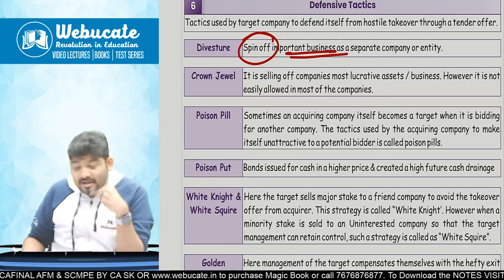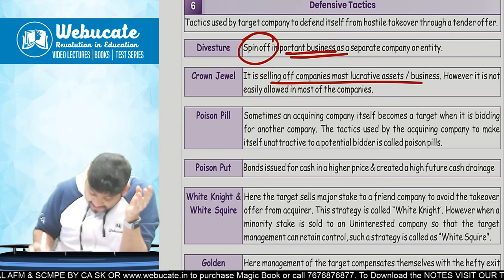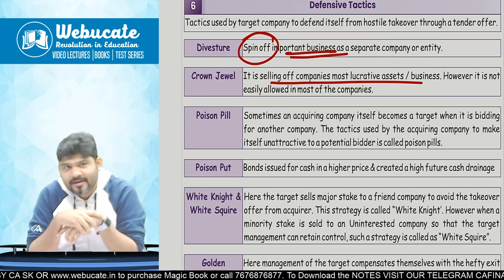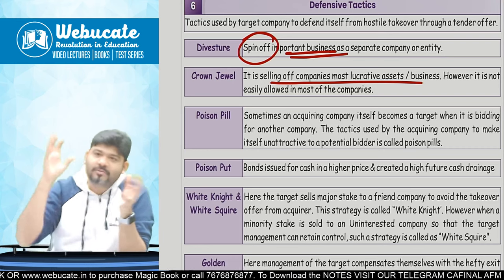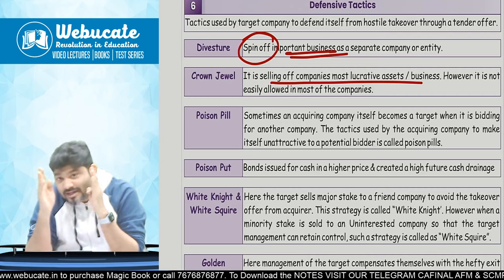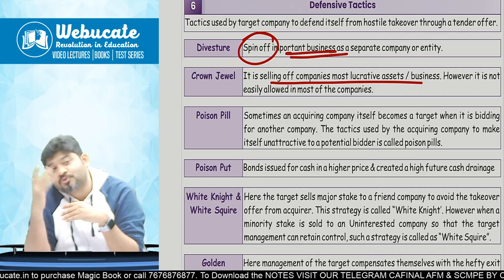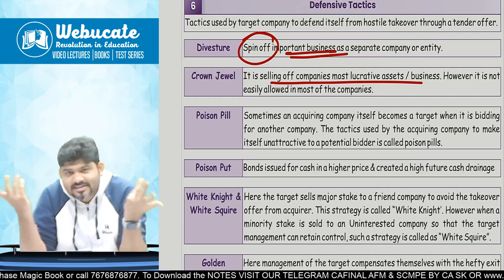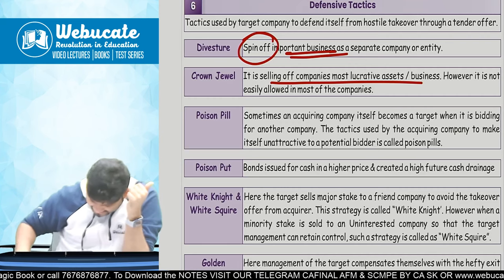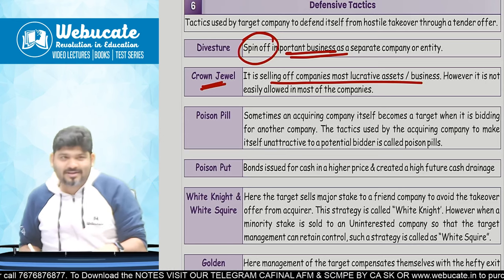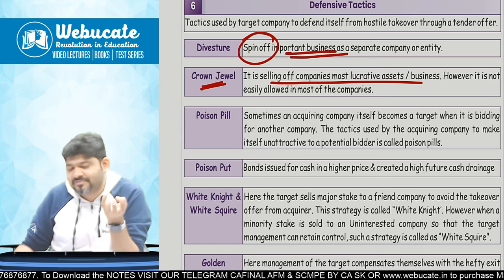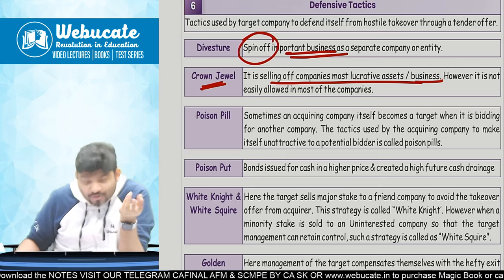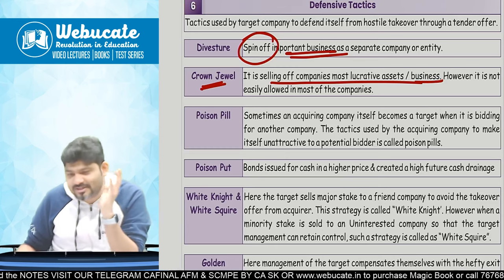Then there is Crown Jewel — selling the company's most lucrative assets. If a big company is trying to acquire a small company, the small company can sell some of its best assets, making the acquirer no longer interested. However, in practice, shareholders typically will not allow selling the most lucrative assets, so Crown Jewel is generally not practically possible.